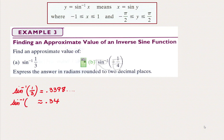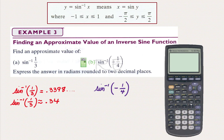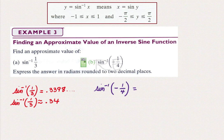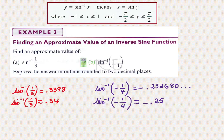Inverse sine 1/3 is approximately 0.34. Inverse sine negative 1/4. Using the calculator, we will get inverse sine negative, make sure you press on the negative. 1/4 is approximately negative 0.25 to 2 decimal places.